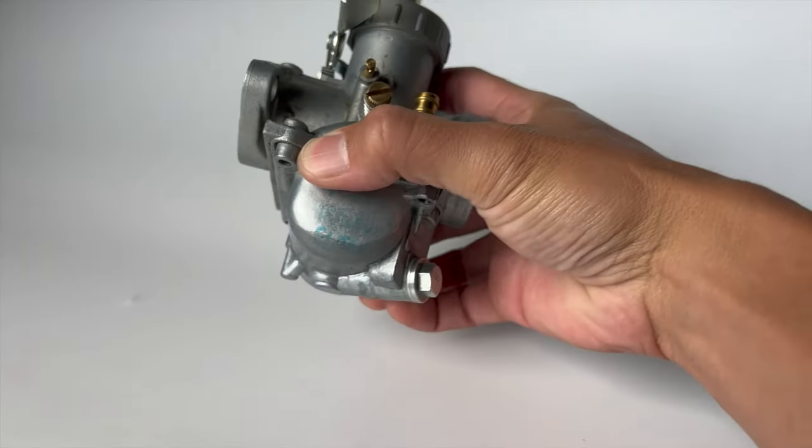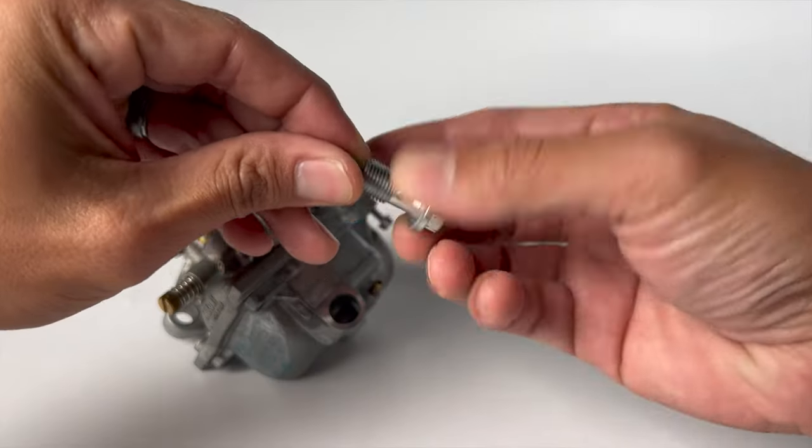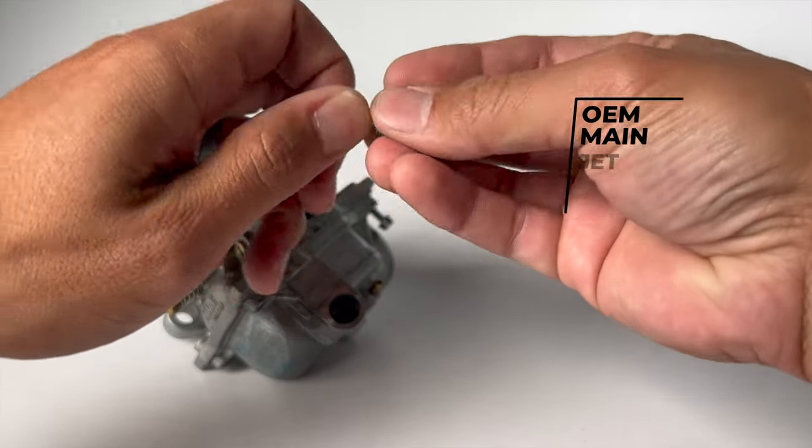Here's our 22 mil carburetor. Our main jet is going to be right behind this bolt. And here is the main jet attached.